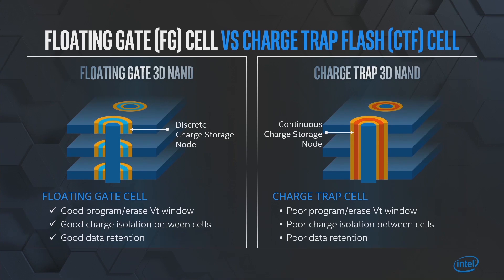The logical conclusion of that poor charge isolation is poor data retention. In addition to that, the program-erase windows are also pretty compressed, and to address that they have to do other innovations like better tunnel oxides, better vertical stacks, as well as metal gates using a replacement gate flow. So there are ways around it, but you have to do more work to get the same job done.